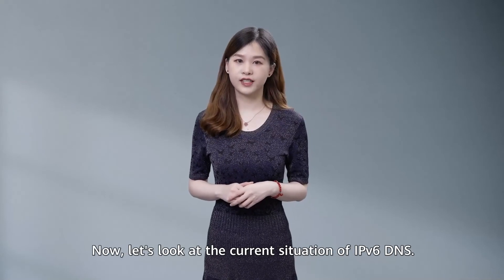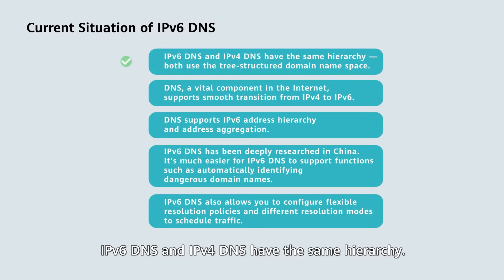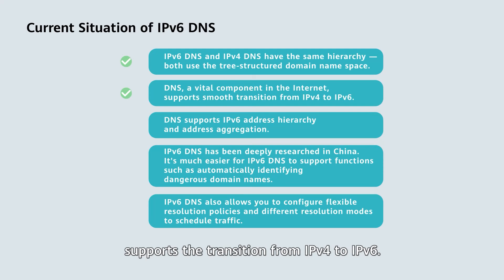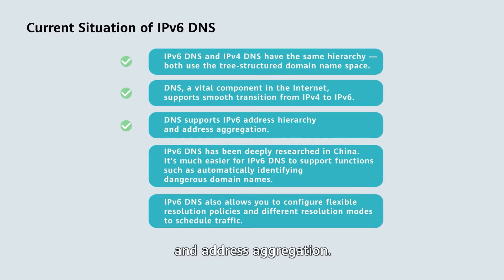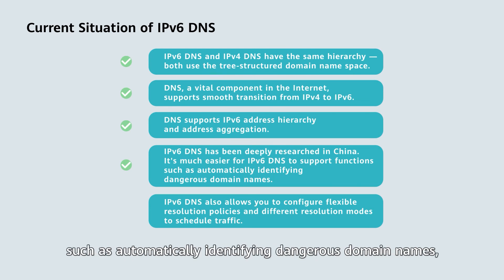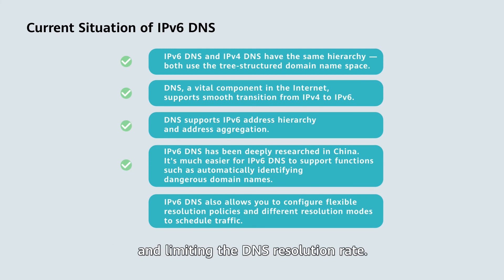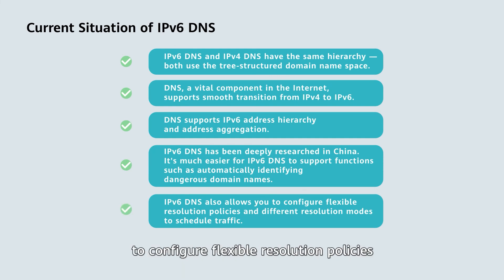Now let's have a look at the current situation of IPv6 DNS. IPv6 DNS and IPv4 DNS have the same hierarchy. DNS, a vital component of the internet, supports the transition from IPv4 to IPv6, and also supports IPv6 address hierarchy and address aggregation. IPv6 DNS has been deeply researched in China. It's much easier for IPv6 DNS to support functions such as automatically identifying dangerous domain names, restricting the number of concurrent recursive queries, and limiting the DNS resolution rate. IPv6 DNS also allows you to configure flexible resolution policies and different resolution modes to schedule traffic.